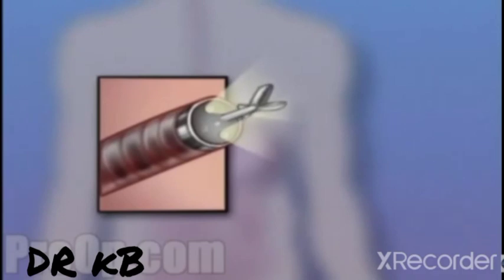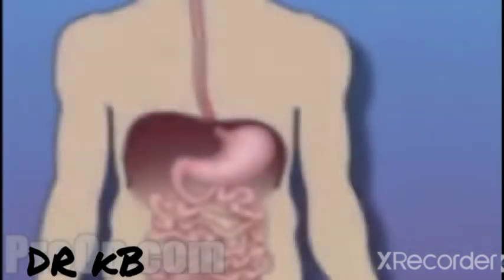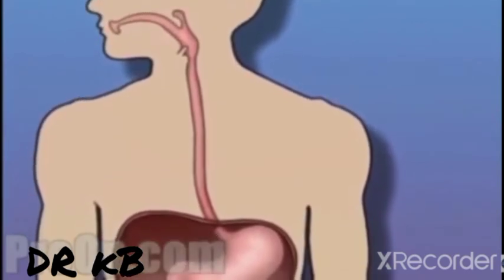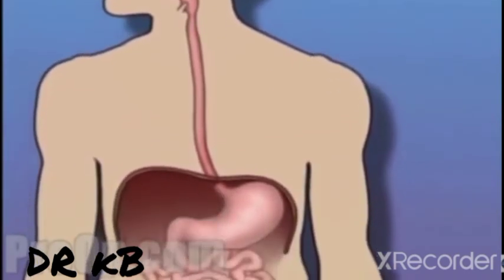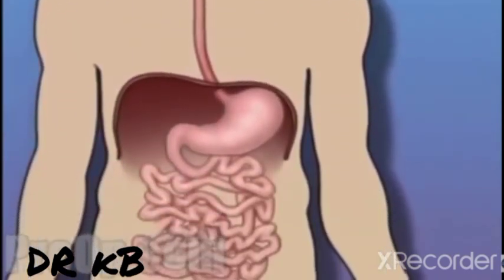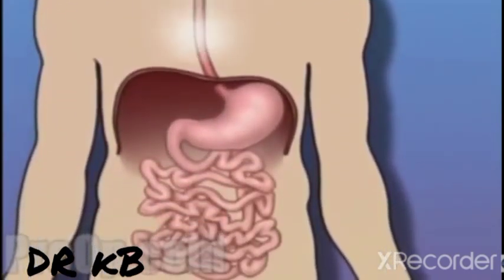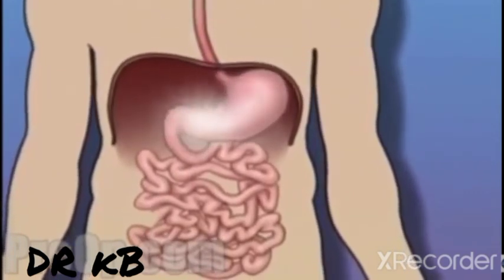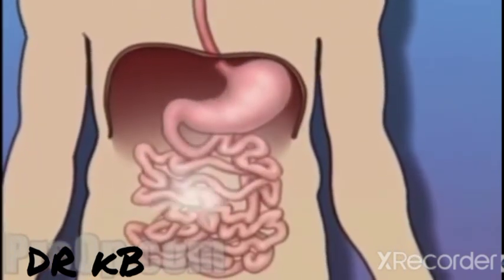This tube has a tiny video camera mounted on its tip. It also contains a small tool used for taking tissue samples. Because the passageway from the mouth to the opening of the small intestine is usually unobstructed, your doctor can use the endoscope to inspect the entire upper half of your digestive system.